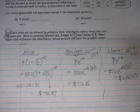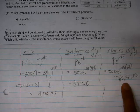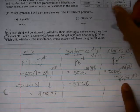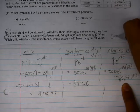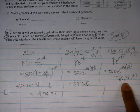Looking at our three options and whose account will have the greatest value, we can clearly see that Charles ends up getting the most money in the end when he turns 55.